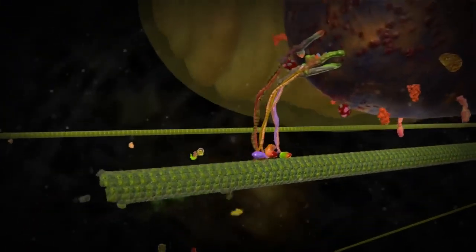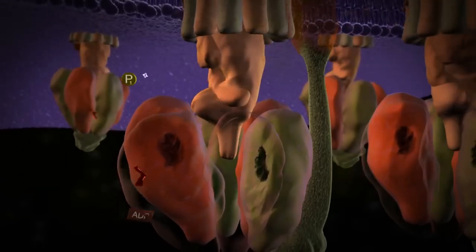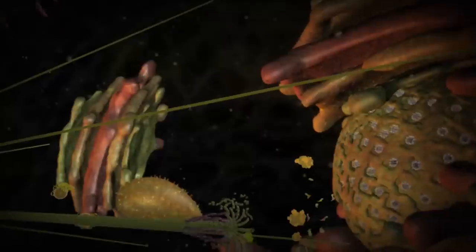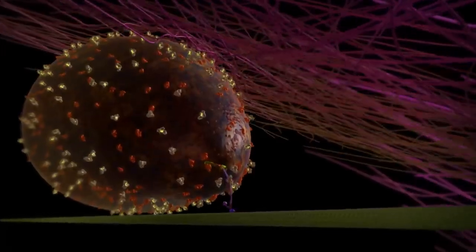Proteins in turn perform a vast array of critical jobs inside cells, catalyzing reactions, processing genetic information, and forming the structural parts of molecular machines and other biological structures.